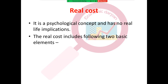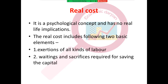Next is real cost. It does not always happen that a producer has to make a cash payment — sometimes the cost is borne mentally or psychologically. It is a psychological concept and has no direct monetary implication. For example, the exertion of all kinds of labor: if there is a labor problem in a factory, the producer has to deal with it mentally, causing tension and stress. All such non-monetary burdens borne by the producer — such as mental tension due to labor problems or the anxiety of applying for a loan — fall under real cost.